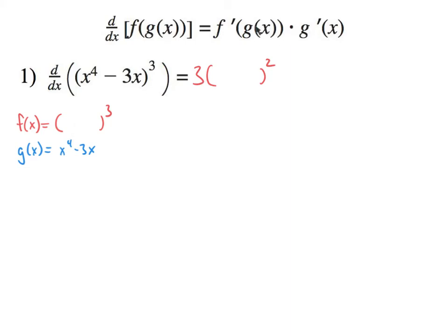Then we leave g inside — which is x to the fourth minus 3x — according to the formula: take the derivative of the outside, leave the inside. Now we take the derivative of the inside, this g. The derivative of g is simply 4x to the third minus 3, and we multiply it at the end. And we are done.